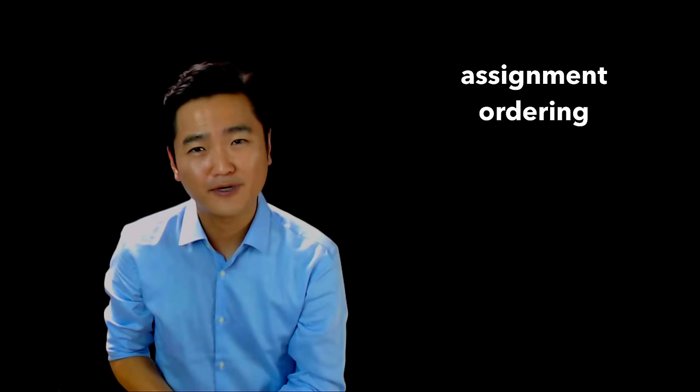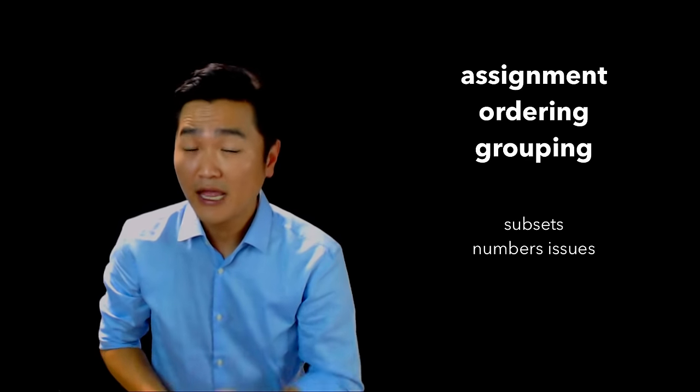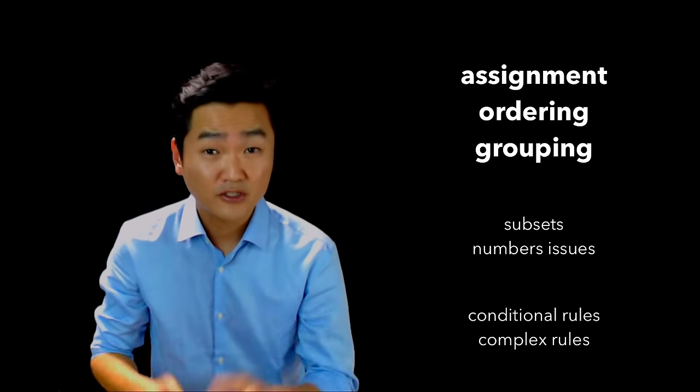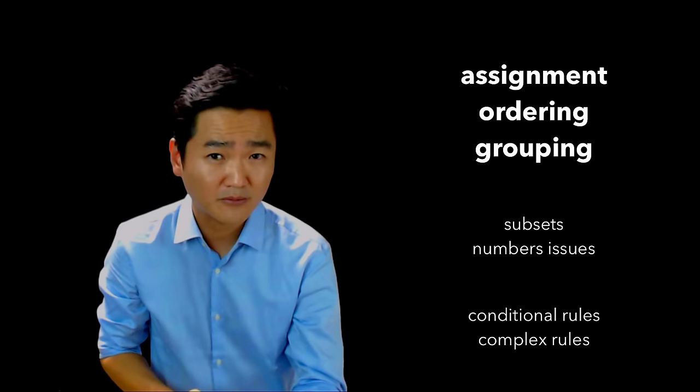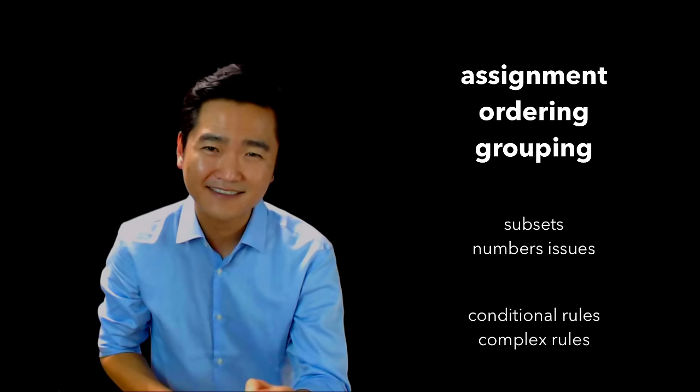Here are some of the key points that we've discussed thus far. All LSAT logic games are about assigning elements to positions. About two-thirds of all games involve ordering, and about half of all games involve grouping. Some games, like the one we're about to play, involve both ordering and grouping. The design of certain games can be further complicated by subsets and numbers issues. And rules can be complicated by being made conditional or complex. Just seven issues for you to master. And if you can learn to think about all LSAT logic games in terms of these seven conditions, they'll put you in a great position to perform at your best on test day.